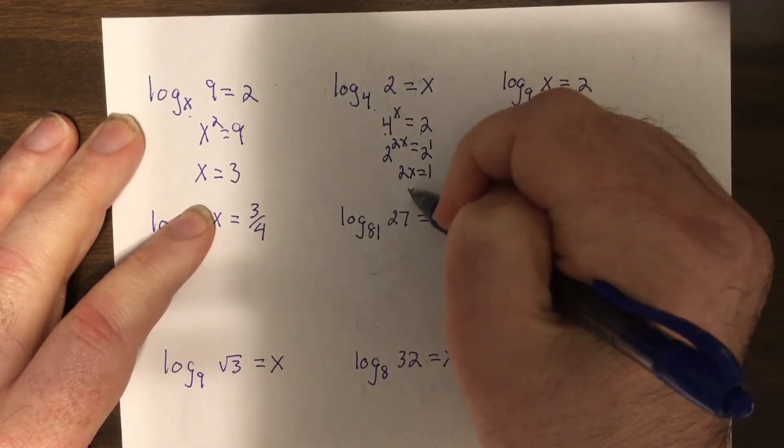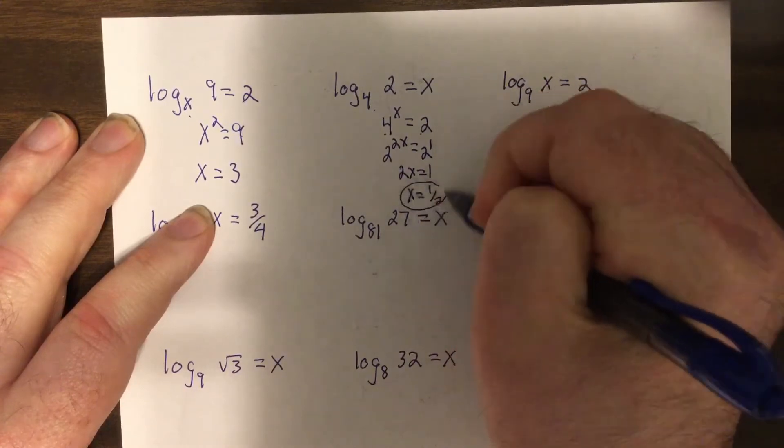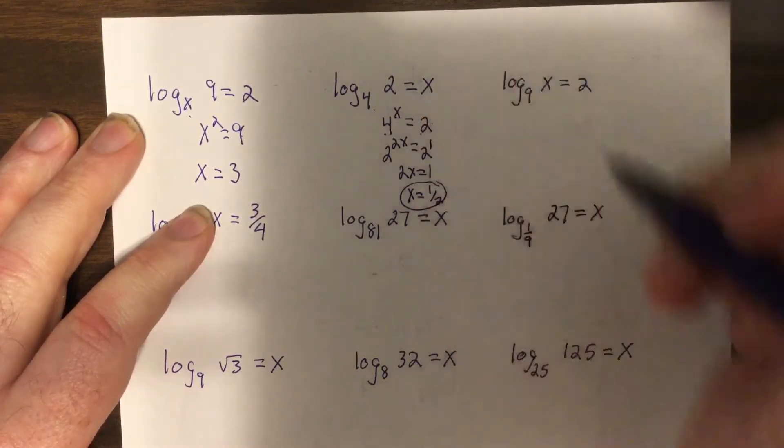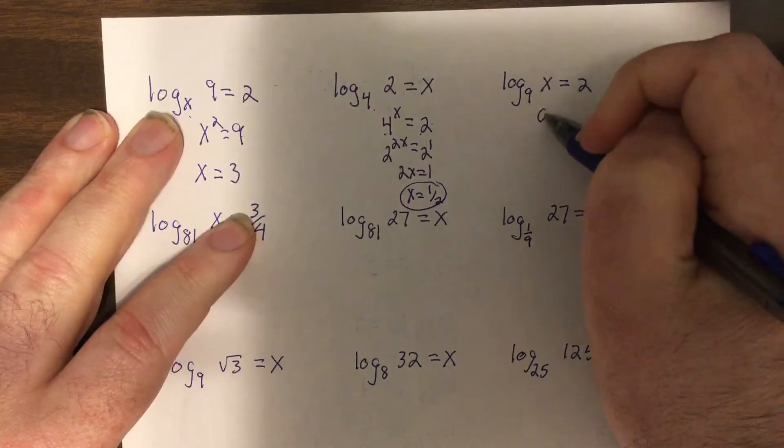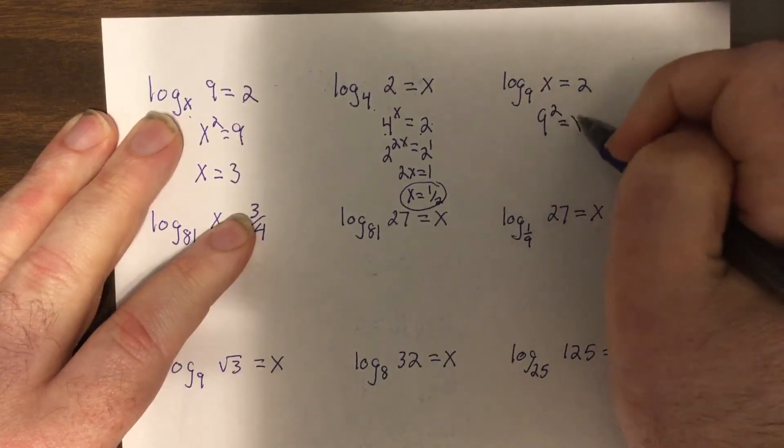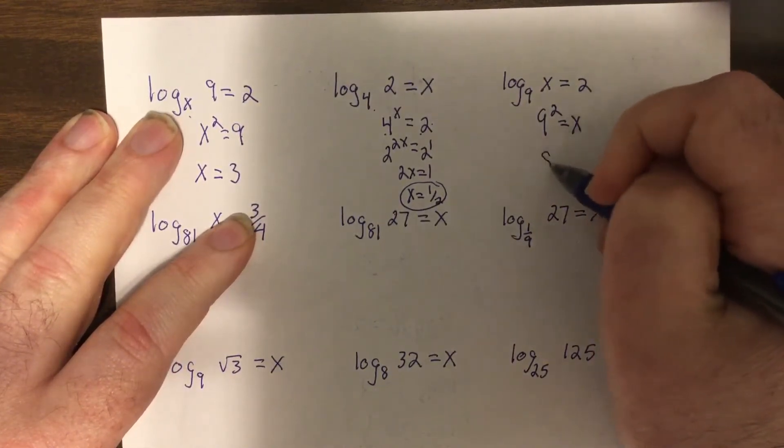So the square root of four is two, so nine squared equals x, so x is 81.